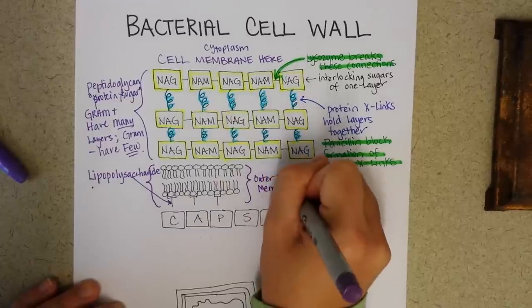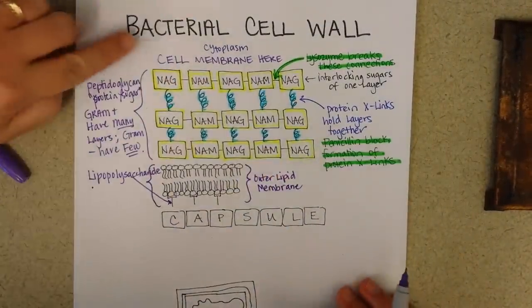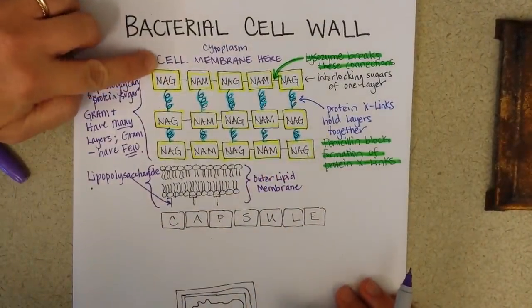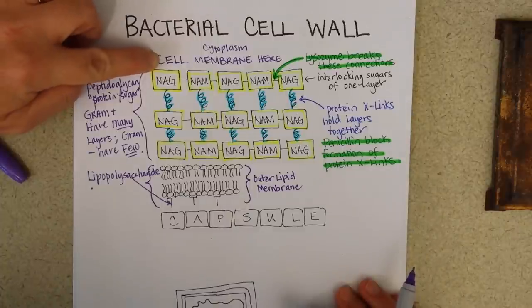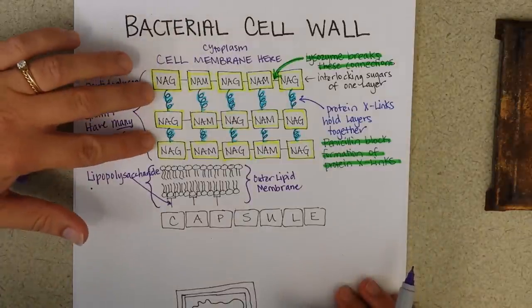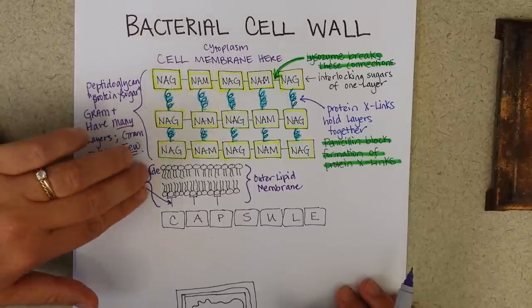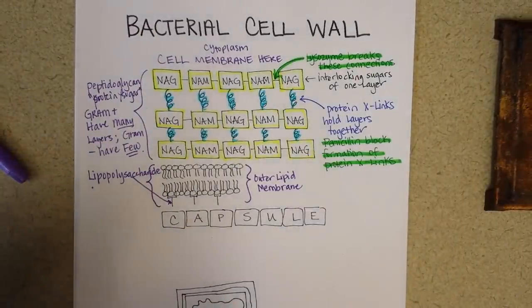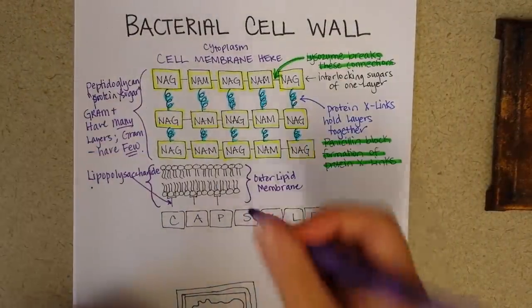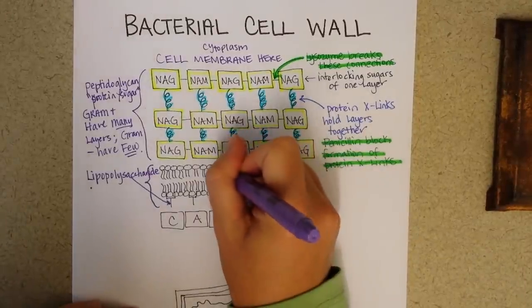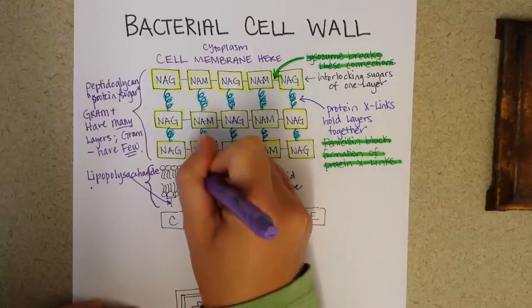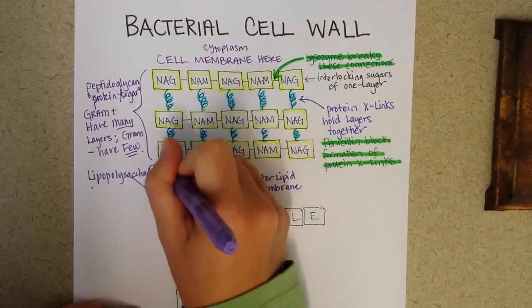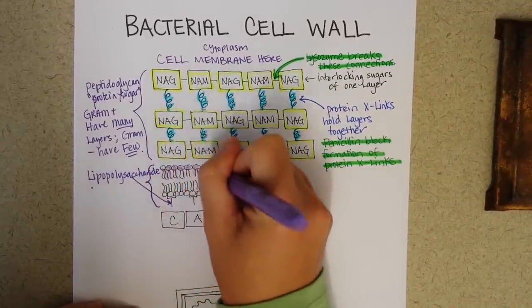So for gram negative bacteria, they have a lipid cell membrane, so it would be like the inner lipid membrane in a way. Then they have peptidoglycan, then they have an outer lipid membrane. And this outer lipid membrane is like a typical lipid membrane with the hydrophilic heads and the hydrophobic tails pointing in.